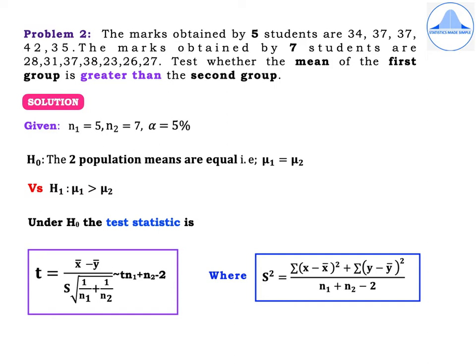Problem 2. The marks obtained by 5 students are 34, 37, 37, 42, 35. The marks obtained by 7 students are 28, 31, 37, 38, 23, 26, 27. Test whether the mean of the first group is greater than the second group. In this problem we have two groups: the first having 5 students and the second having 7 students. The sample sizes 5 and 7 are less than 30, and the word mean is used, so this problem is based on the T-test for equality of means.